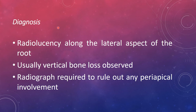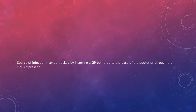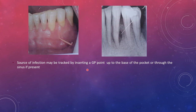For diagnosis: in periodontal abscess, radiolucency will be along the lateral aspect of the root with a vertical type of bone loss. A radiograph is required to rule out any periapical involvement. The source of infection may be tracked by inserting a GP (gutta-percha) point clinically to track the source of infection up to the base of the pocket or through the sinus present, and then taking a radiograph to identify the abscess area.